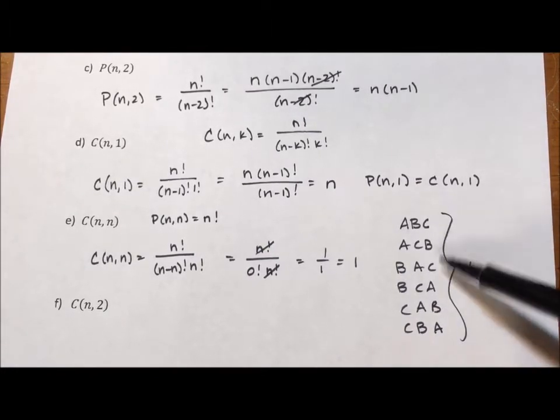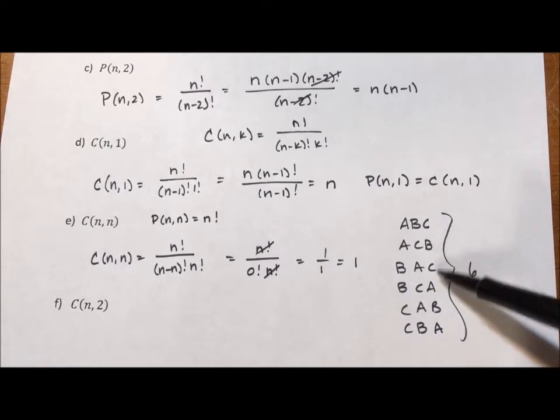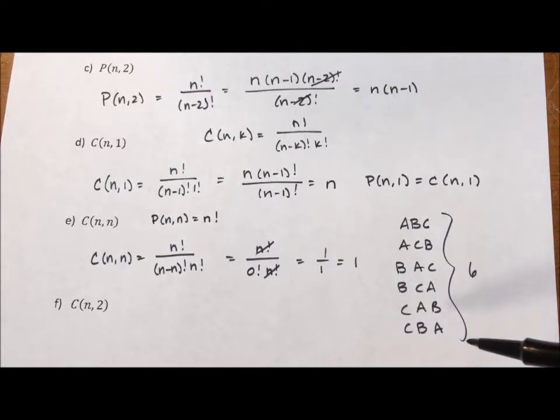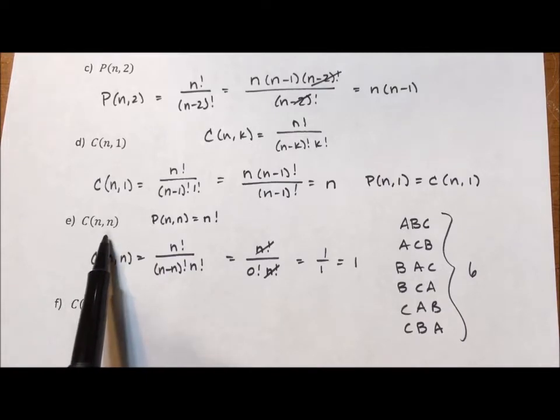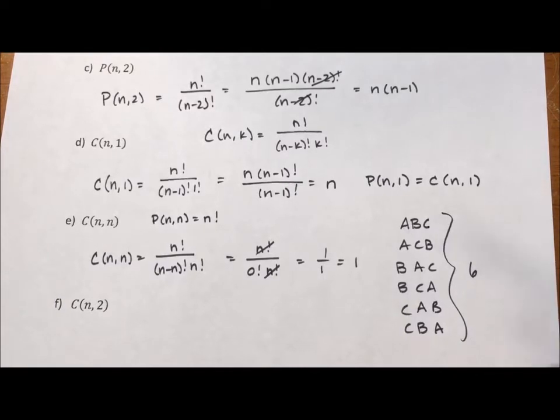Now, with permutation, every one of these is different because order matters. In combination, the order doesn't matter. It's like pizza toppings. It doesn't matter what order you put the three toppings on. It's the same three toppings. So if you're doing the combination of n items taken n at a time, that means you're taking all of them, which means the outcome is one. There's only one way you can combine all of the items because order does not matter.